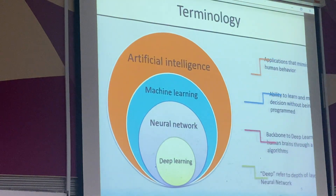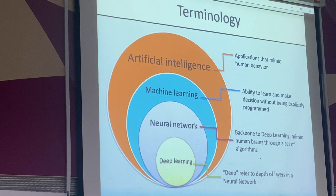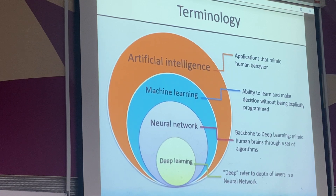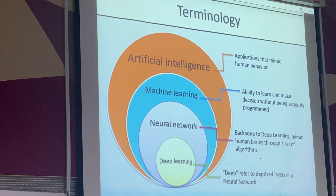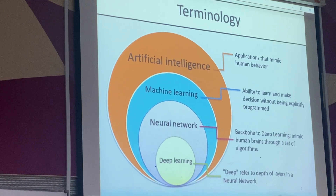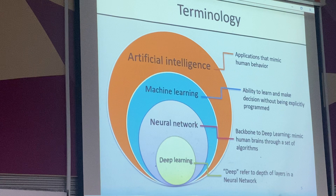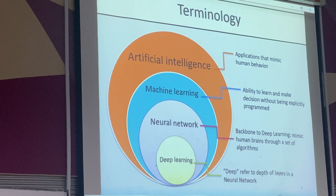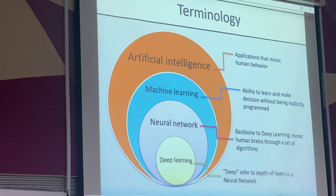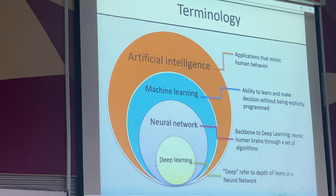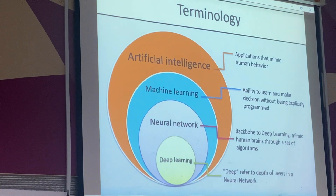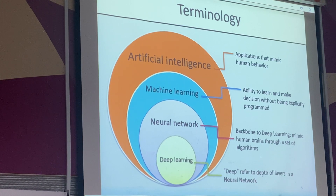Under machine learning, we have neural networks — which is the backbone to build deep learning models. It mimics human brains through a set of algorithms. Under neural networks, we have deep learning. The difference between machine learning and deep learning: in machine learning, we still need to extract features and tell the machine which features to use. In deep learning, we just throw everything in and the model finds the suitable features itself — it's getting smarter and smarter.